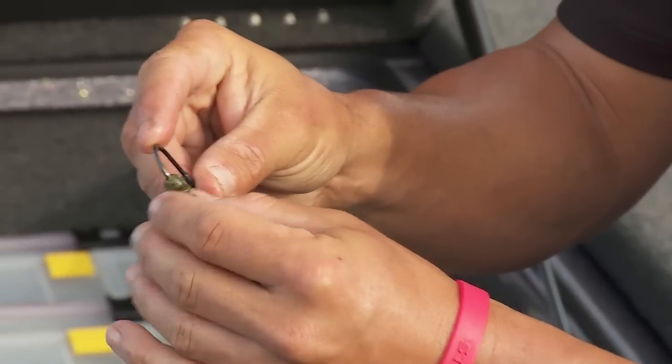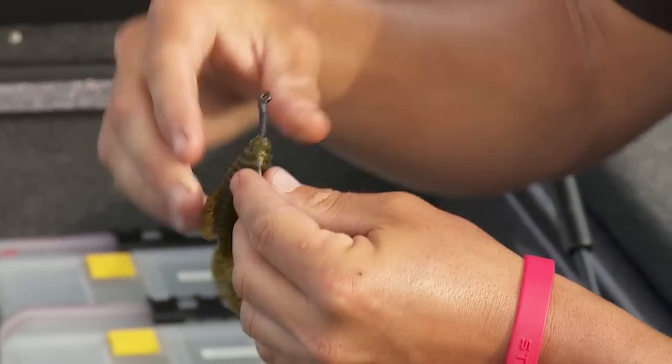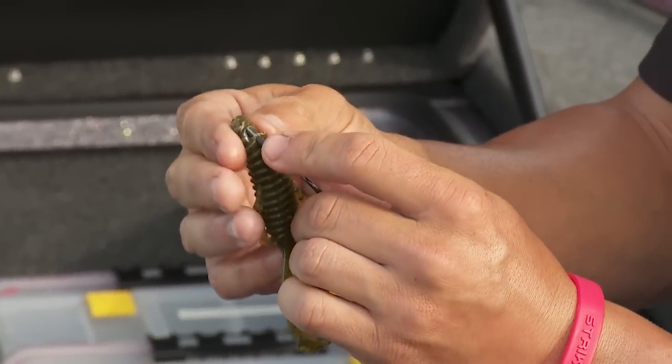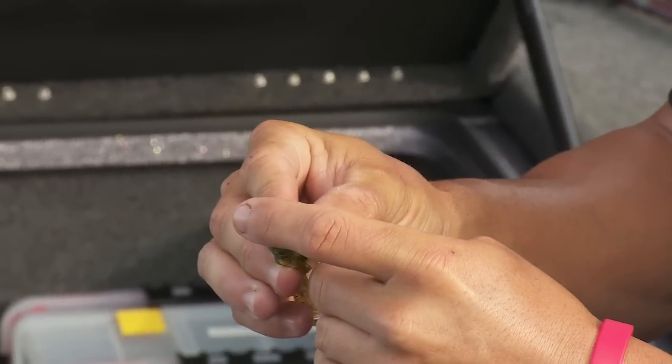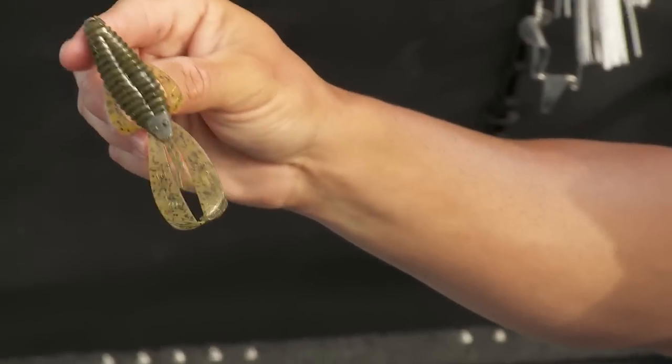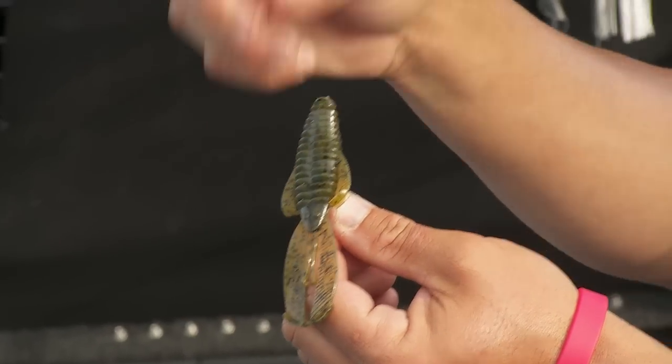With the straight flipping hook, I'd go through the same way, quarter of an inch, and tuck it back into the body itself so the hooks are not exposed. A lot of times I'm fishing that with a heavyweight above it.